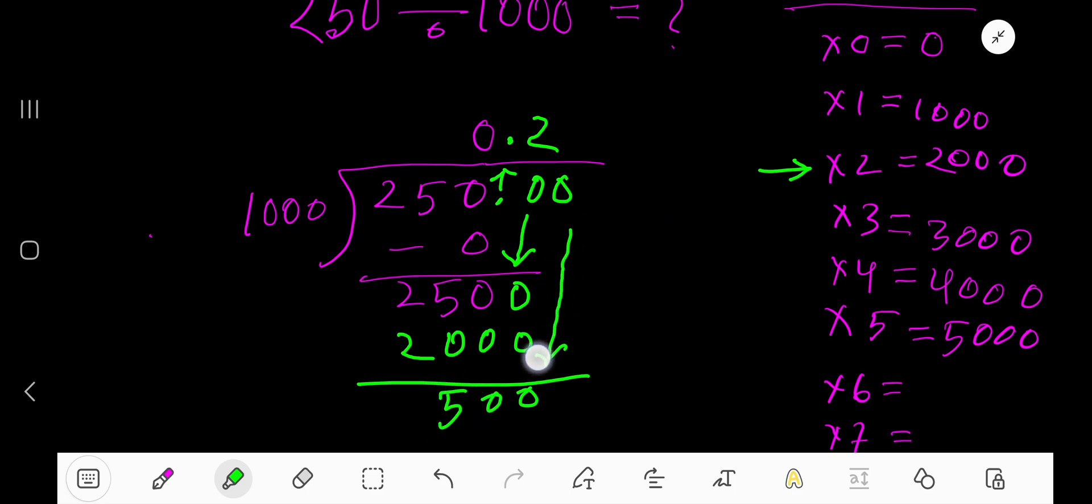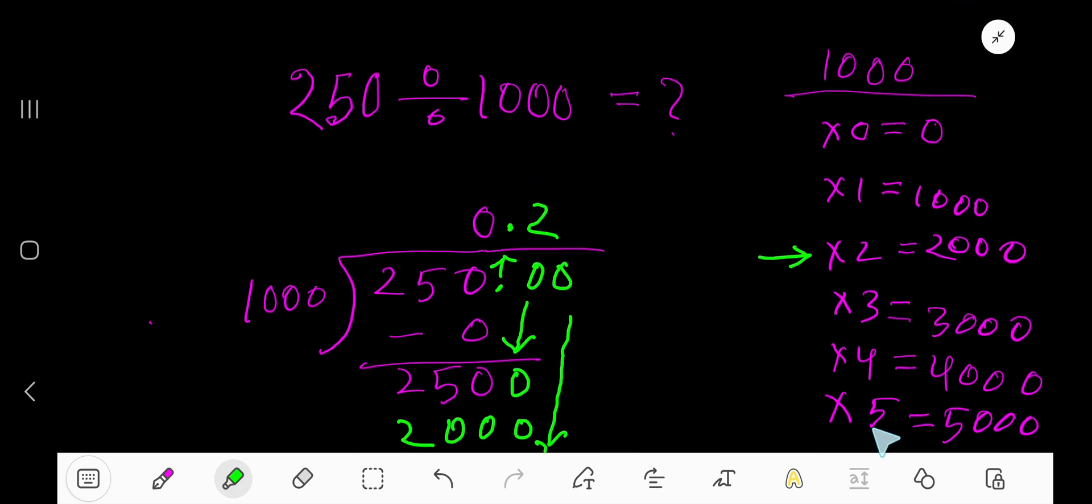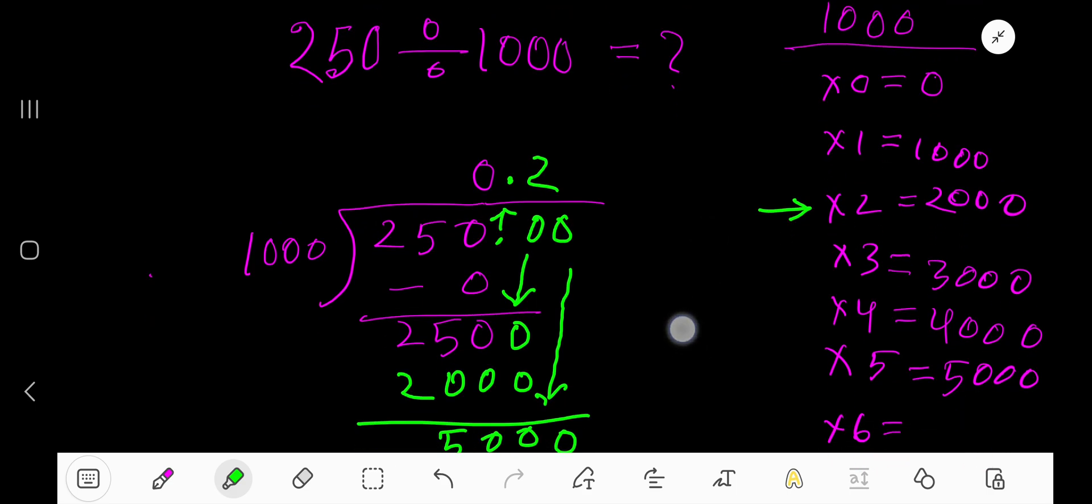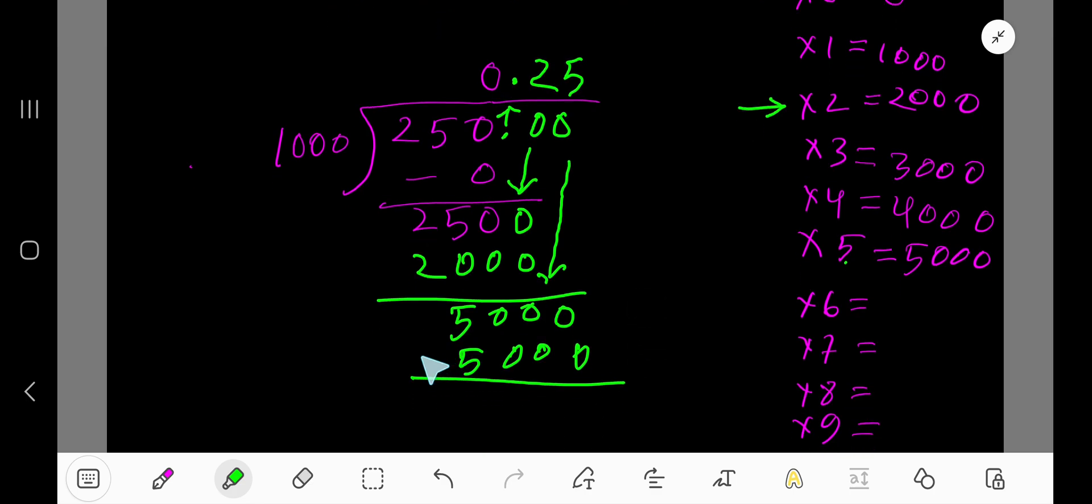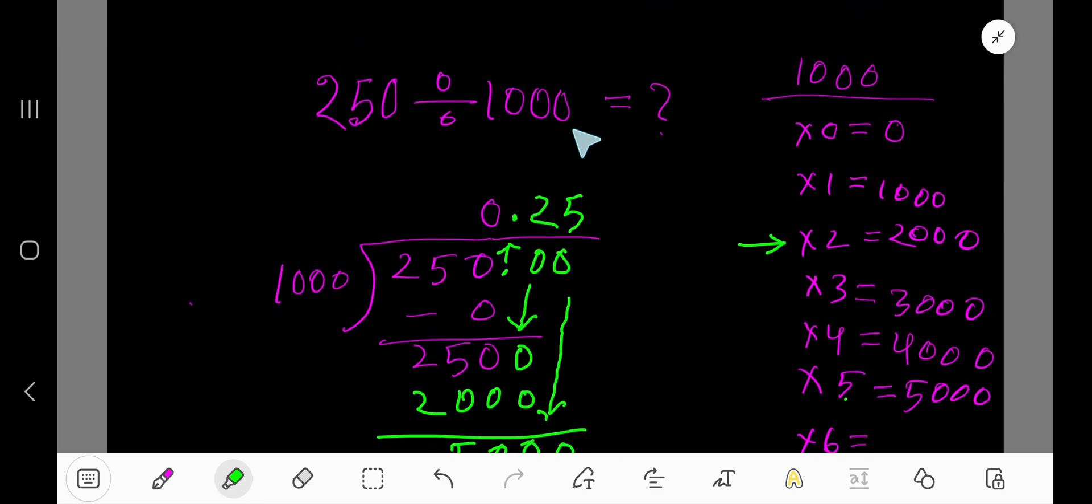Now bring down this 0, 5000. Then 1000 times 5, that gives us 5000. That is, 1000 goes into 5000 how many times? 5 times. Right here, 5. 5 times 1000, 5000. So you are getting here 0. So 0.25, this is the answer actually.